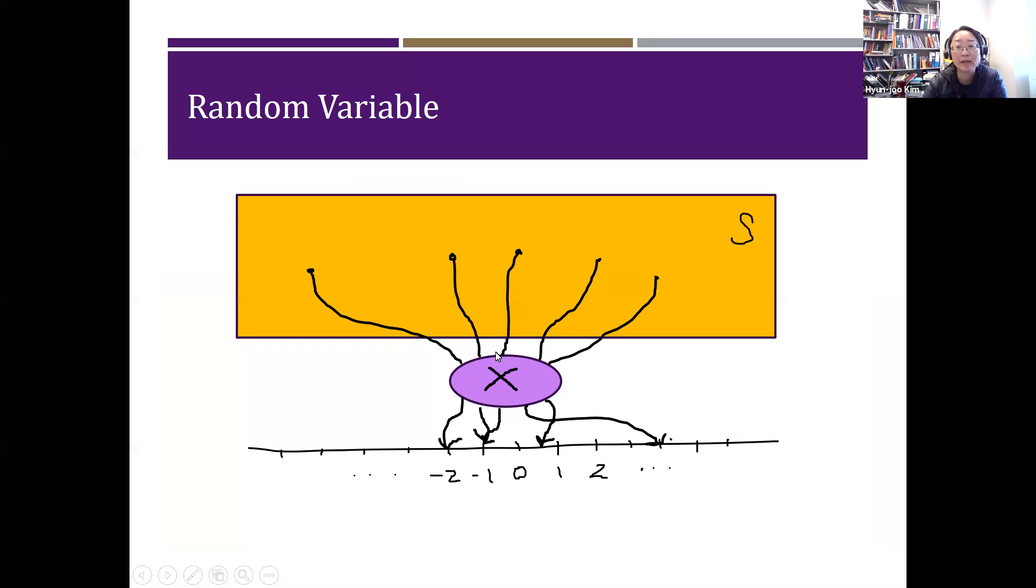The figure in the next page describes what a random variable does. There is your sample space with each event, and obviously there will be probably more events there. But each outcome goes through the random variable X, and then that random variable will assign values to each outcome.